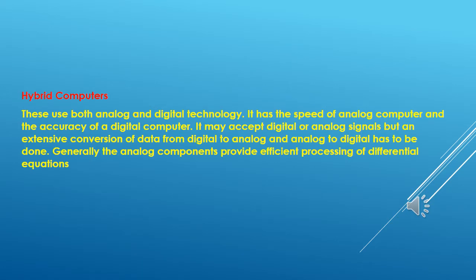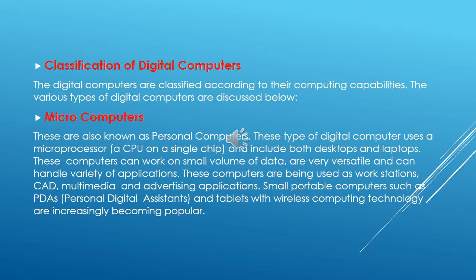The third type of computer is the hybrid computer. Hybrid computers use both analog and digital technologies. They have the speed of an analog computer and the accuracy of a digital computer. They accept both digital and analog data, and convert analog data into digital and digital data into analog. Generally, the analog components provide efficient processing of differential equations.